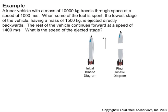Here's our first problem involving a system of particles. A lunar vehicle with a mass of 10,000 kilograms travels through space at a speed of 1,000 meters per second. When some of the fuel is spent, the lowest stage of the vehicle, having a mass of 1,500 kilograms, is ejected directly backwards. The rest of the vehicle continues forward at a speed of 1,400 meters per second. What is the speed of the ejected stage?